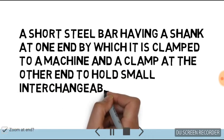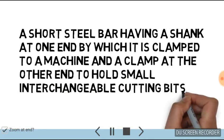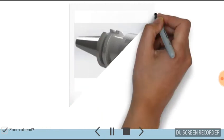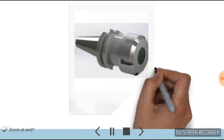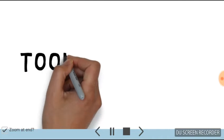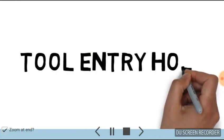Now this is the basic diagram of a tool holder, in which there are basically two parts of the tool holder: the tool entry hole and the taper for the machine.